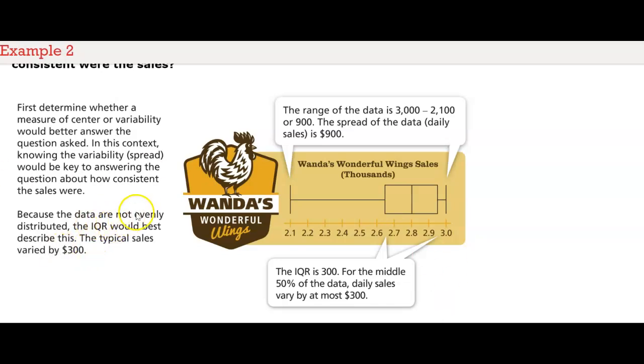Because the data are not evenly distributed, the IQR would be best to describe this. The typical sales varied by 300. Because they have this data way over here, that means more of the data stays over on this side. That's why the inter-quartile range is better than the range for the whole set of the data.